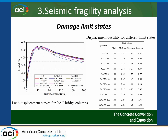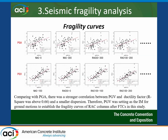Using those 100 ground motions and all the different samples, the fragility analysis was carried out. Two different intensity measures were considered — peak ground acceleration (PGA) and peak ground velocity (PGV) — to determine which is more suitable for this scenario. Based on the R-squared correlation coefficient between the intensity measure and the demand parameter, PGV was found to be a better choice, showing a better correlation with the ductility demand parameter.